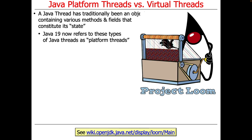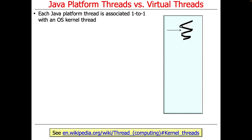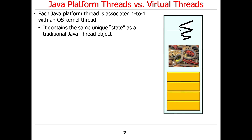Java 19, and conceivably henceforth, refers to these types of classic Java threads as so-called platform threads. A platform thread is just a traditional Java thread that you know and love from the past 25 to 30 years. Each Java platform thread is associated one-to-one with an operating system kernel thread, so every time you allocate a thread object in Java, a kernel thread was allocated. A platform thread contains all the same unique state as a traditional Java thread.